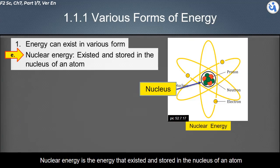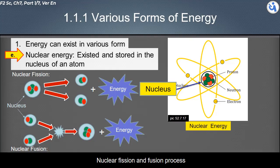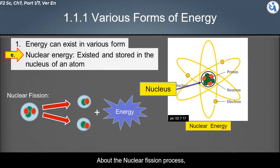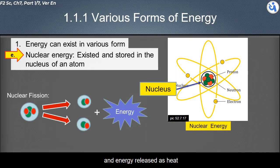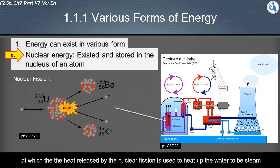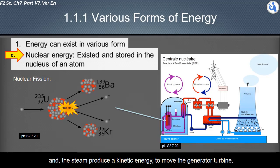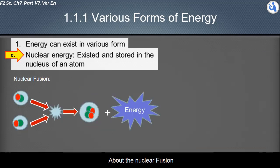Nuclear energy is the energy that exists and is stored in the nucleus of an atom. Nuclear energy can be released through two processes: nuclear fission and fusion. In nuclear fission, the nucleus of an atom splits into two or more smaller nuclei, releasing energy as heat. This principle is used in traditional nuclear power plants, where the heat released by nuclear fission heats water to produce steam, and the steam provides kinetic energy to move a generator turbine, generating electricity.